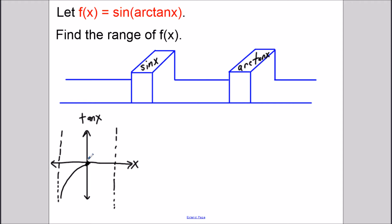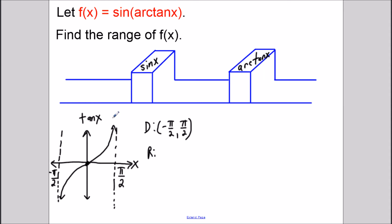Remember, tangent of x just repeats over and over — it goes up to infinity and all the way down to negative infinity, and it just repeats that shape over and over. So if we were to consider the entire graph from negative infinity to infinity, that graph would fail the horizontal line test, it would not be one-to-one, and it would have no inverse. So we cut the domain from negative pi over 2 to pi over 2. The range of tangent x on that restricted domain goes from negative infinity to infinity, and remember negative pi over 2 and pi over 2 are vertical asymptotes.